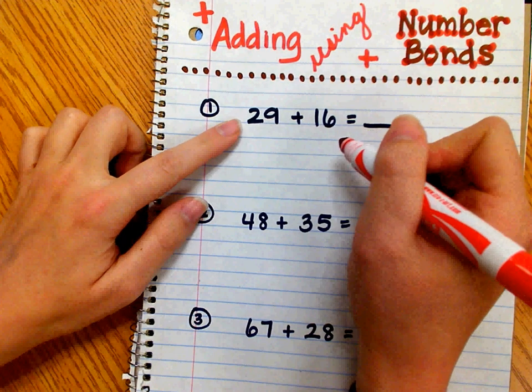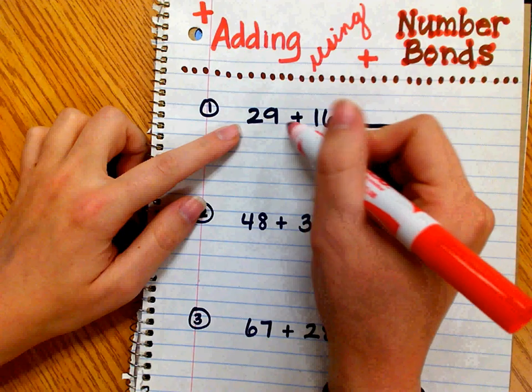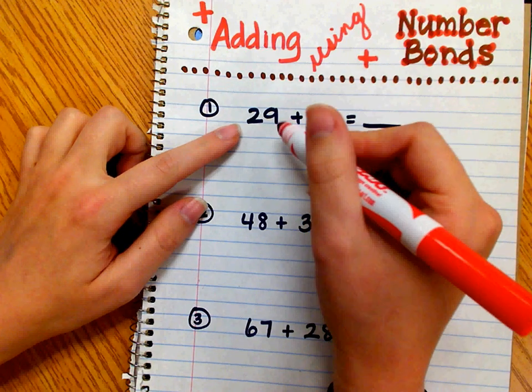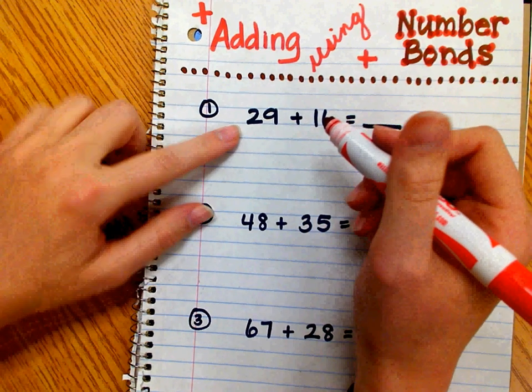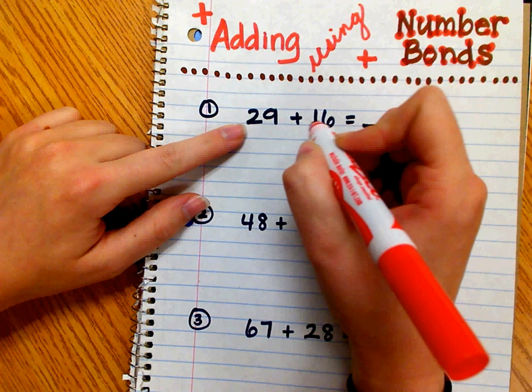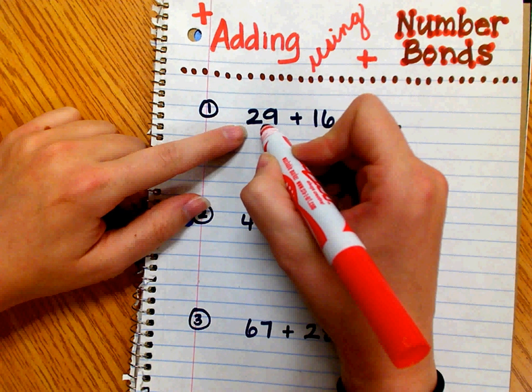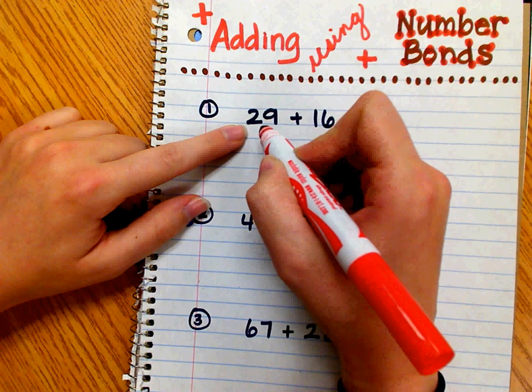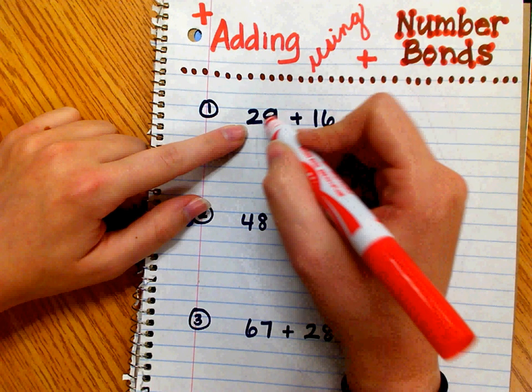This particular strategy helps a student make a 10, which is a friendlier number, a 10 or a multiple of 10. For instance, for 29 plus 16, I know in order for 29 to be a multiple of 10, 30, it needs one more.